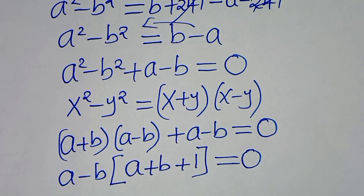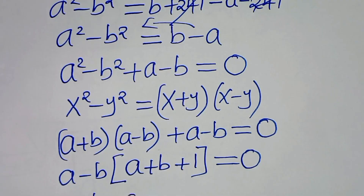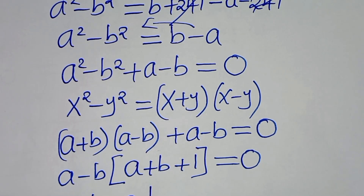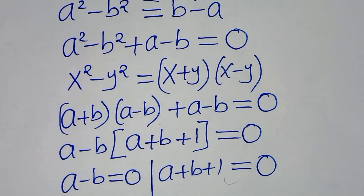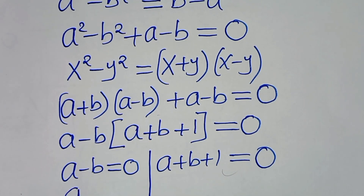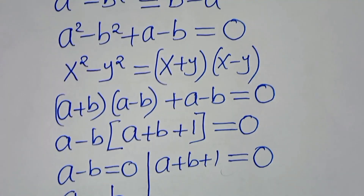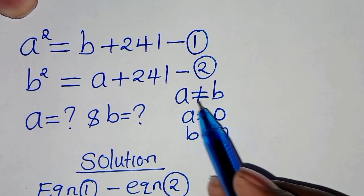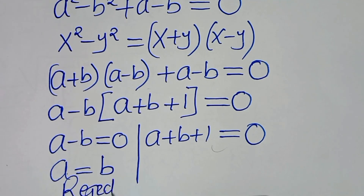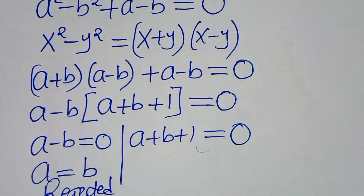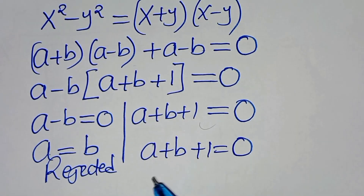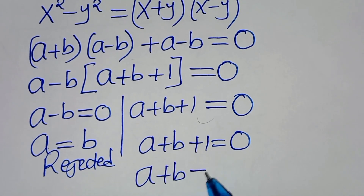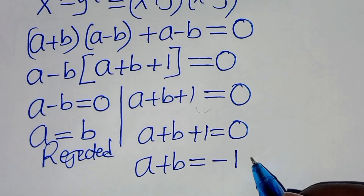This gives two parts: a minus b equals 0, or a plus b plus 1 equals 0. From the first part, a equals b, but this violates our condition that a is not equal to b, so this part is rejected. From the second part, a plus b plus 1 equals 0, which means a plus b equals minus 1. Call this equation 3.